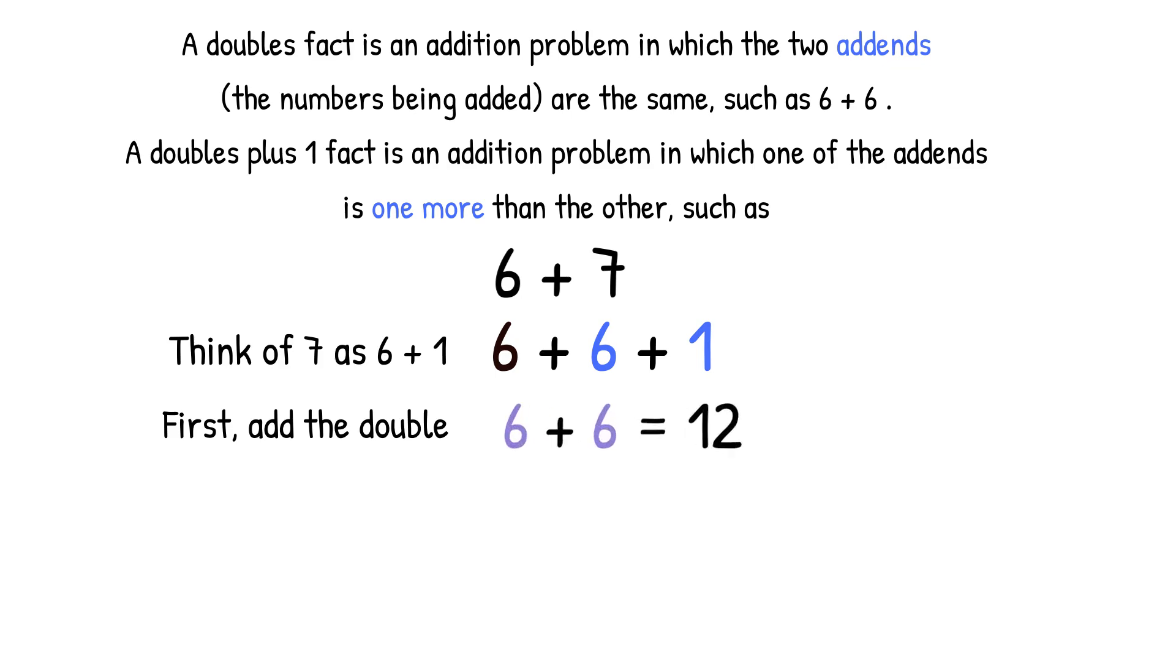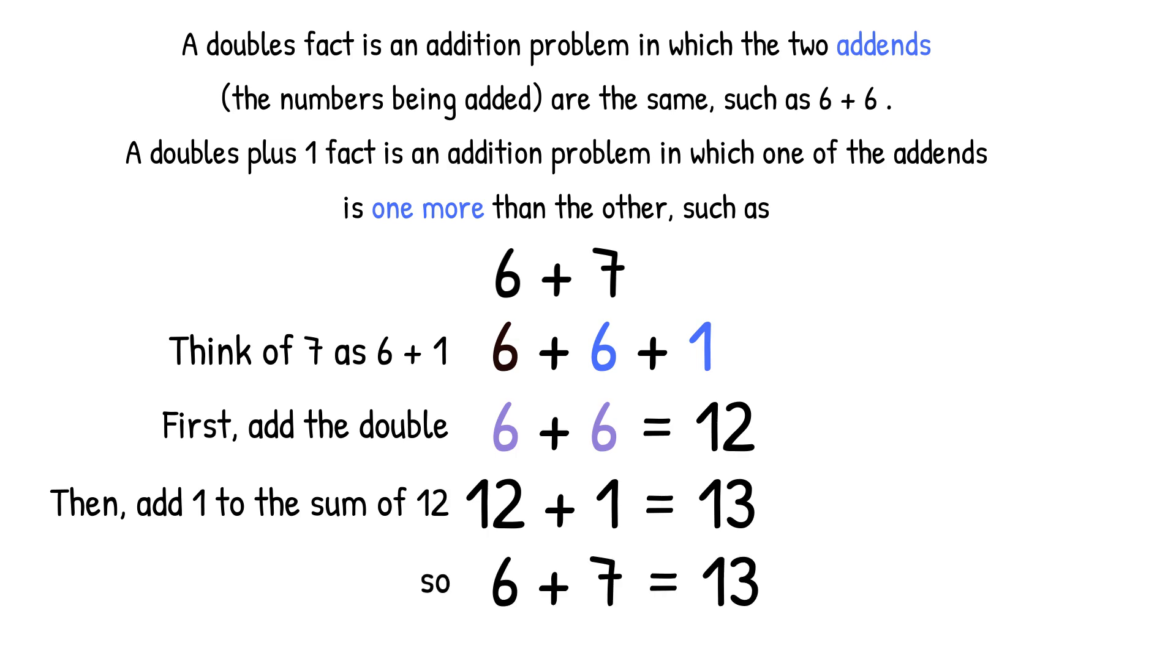First add the double, six plus six equals twelve. Then add one to the sum of twelve, twelve plus one equals thirteen, so six plus seven equals thirteen.